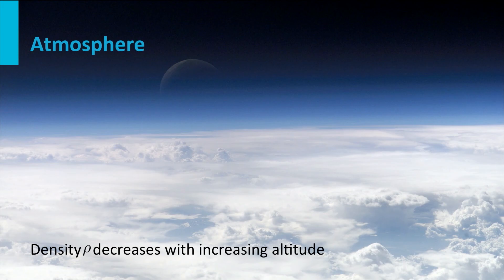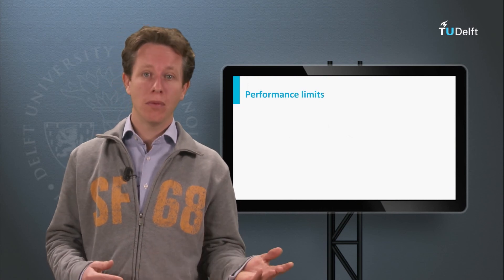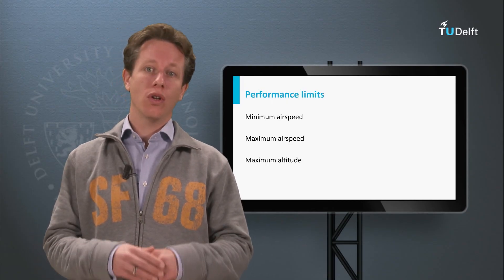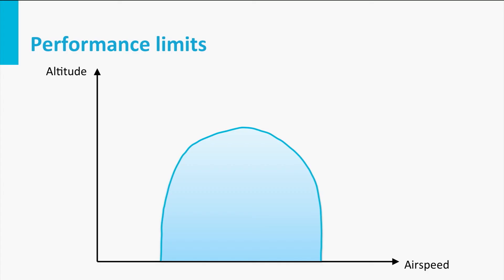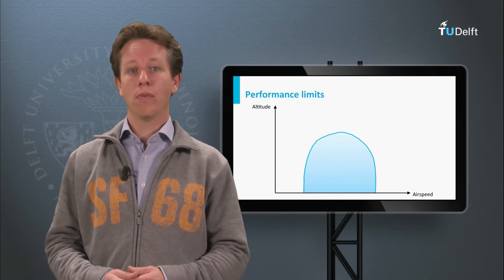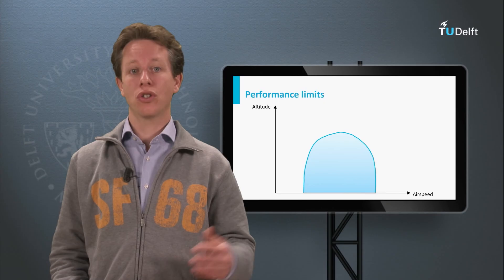There is probably a reason why all commercial aircraft cruise at approximately 10 km altitude instead of 5 km altitude. So the aim of today's lecture is to determine the effect of altitude on aircraft performance. If we are able to calculate the performance limits of an aircraft — minimum airspeed, maximum airspeed, and maximum altitude — we can determine all combinations of altitude and airspeed at which an aircraft can operate.